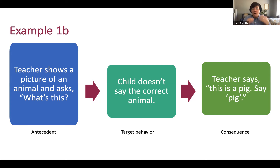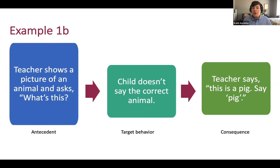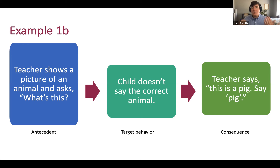A really common error: the child says the incorrect animal and we just ask the question again. That does not teach the child the correct response. If they knew it was a pig, they probably would have said pig. Asking the same question again is just repetition of the question. The feedback they get should always be about the correct response — that's how we change that child behavior. For these specific children and specific learning objectives not occurring naturally through regular exposure, we need to provide more direct instruction to support them in learning these goals.